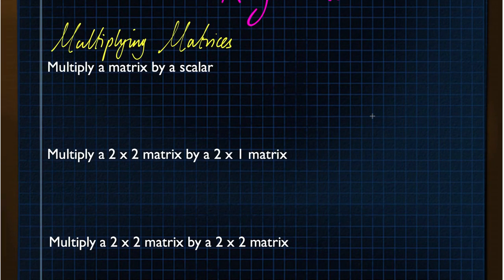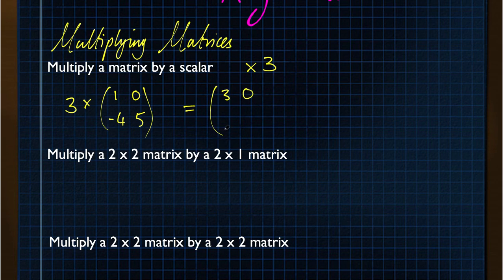Firstly, multiplying matrices. Multiplying by a scalar quantity is very straightforward. A scalar quantity would be just a number. If I had to multiply the matrix by 3, and I was multiplying this matrix, I would simply multiply every digit in the matrix by 3, so it becomes 3, 0, minus 12, 15. That is multiplying by a scalar.